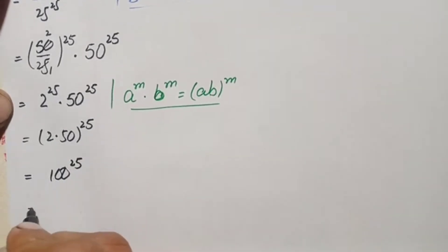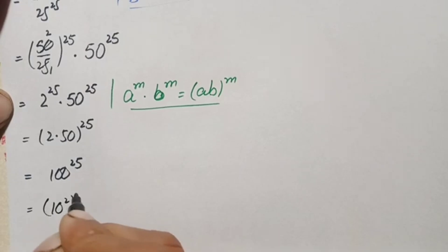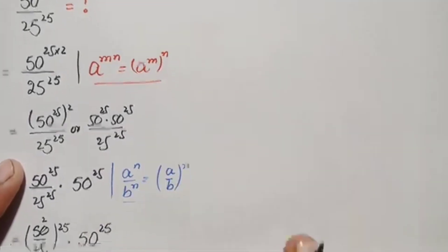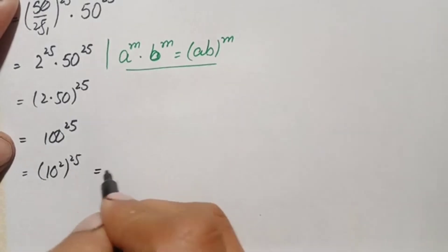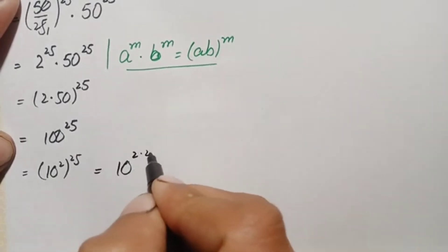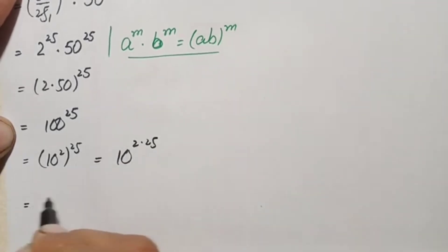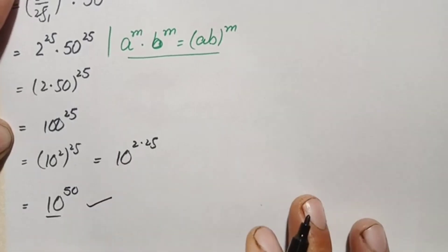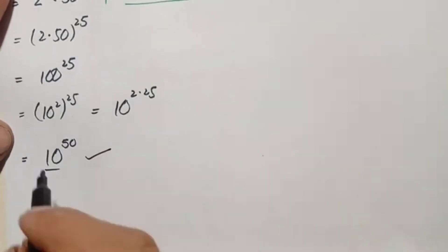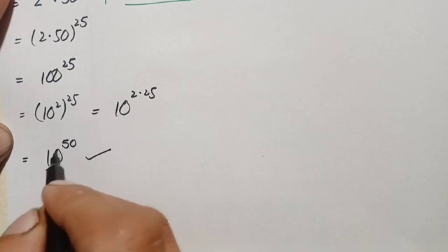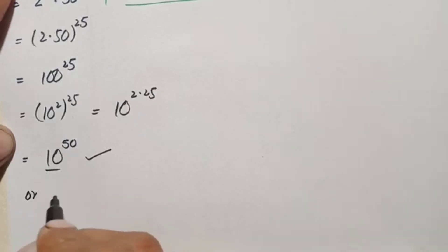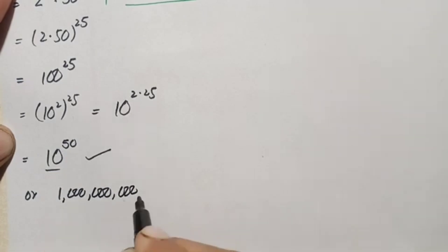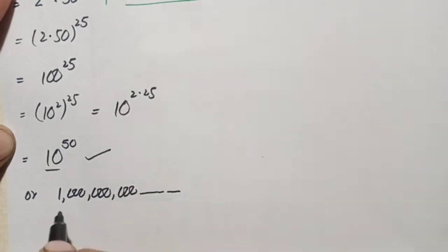We can write 100 in exponential form as 10 squared, all raised to power 25. Using the exponential property, we multiply the powers: 2 times 25 is 50, so this becomes 10 raised to power 50. That is our final answer. This is a very large number — it is 1 followed by 50 zeros.